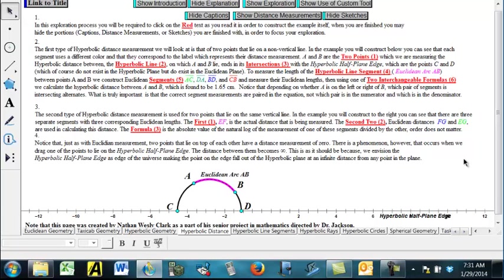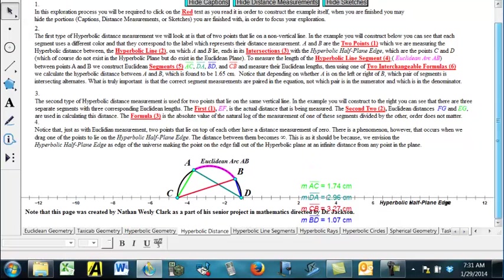So what we want to do is we want to make some Euclidean segments. We're going to make all these segments here. So connect each of the two points to each of the points on the edge. So we're going to make A, C, A, D, B, C, and B, D if they're labeled like you see here in the drawing.